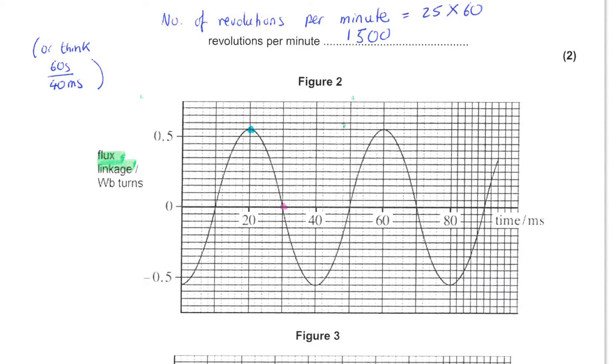The number of revolutions per minute is given by 25 times 60. Remember, frequency is number of revolutions per second when we have that in hertz. So in a minute, you would have 60 times as many revolutions. Alternatively, you just might consider a minute as 60 seconds and the time for one revolution as 40 milliseconds. So the number of revolutions is the larger time divided by the smaller time.